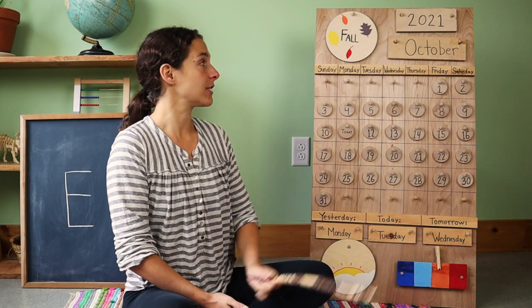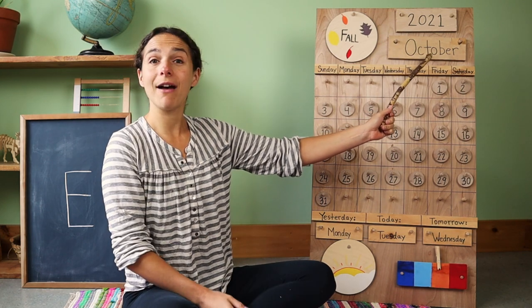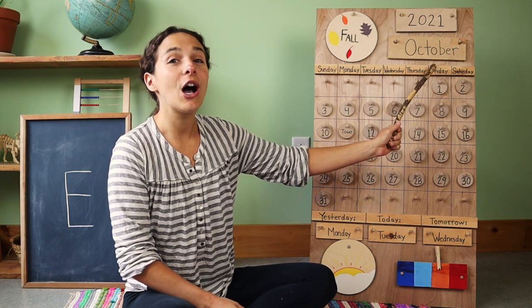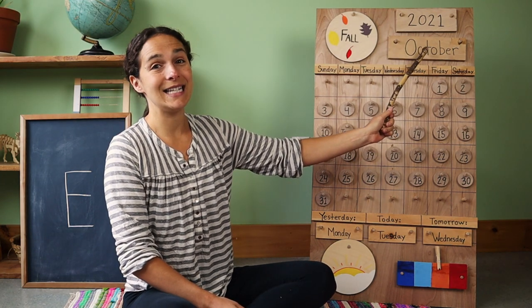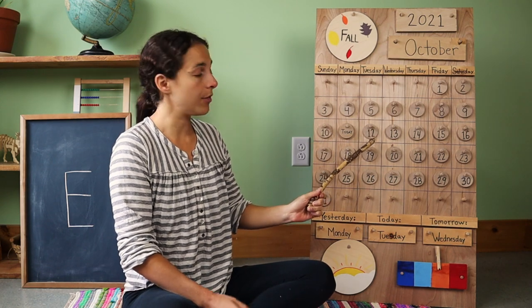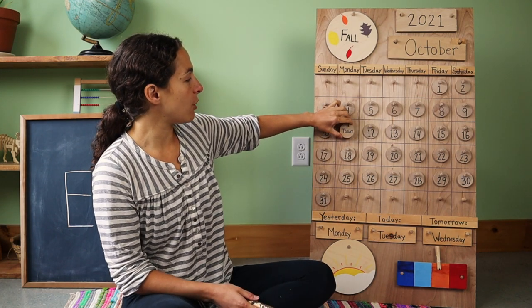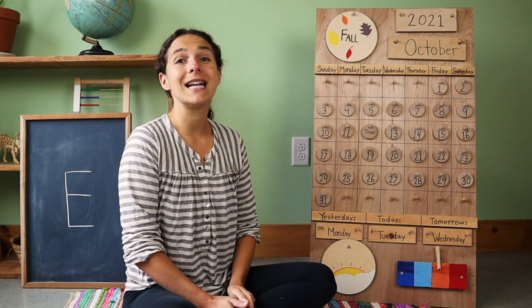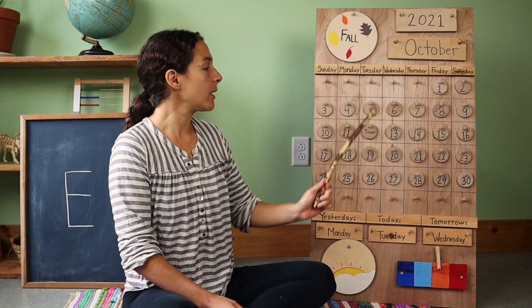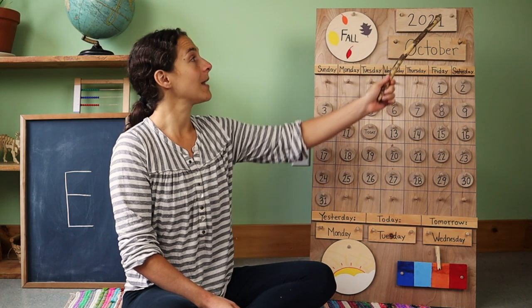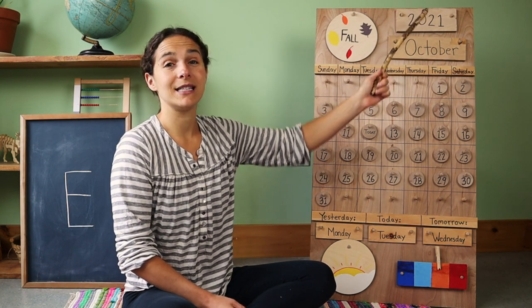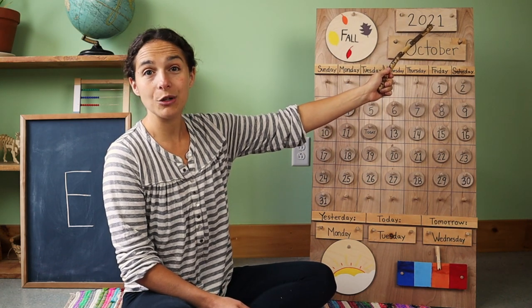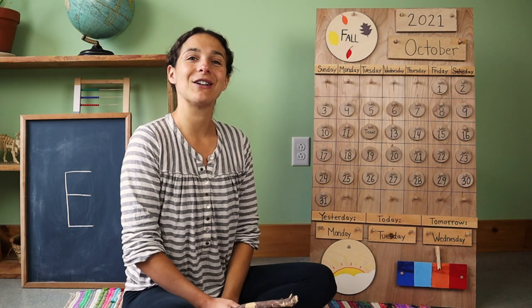Let's go over the date first. Right up here, we have the month. Do you remember what the month is called? October. And today is October 12th. Let's move the tip over from yesterday. Yesterday was October 11th, and today is October 12th. And right up here, we have the year. You can say that it's 2021, but you can also say that the year is 2021. Both of those ways are correct.